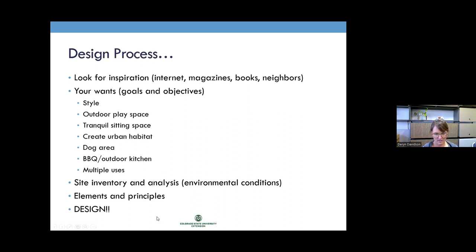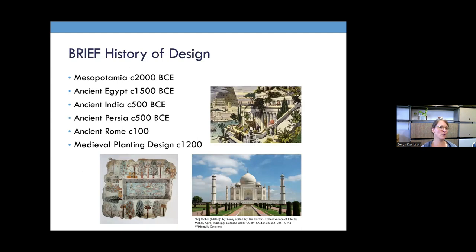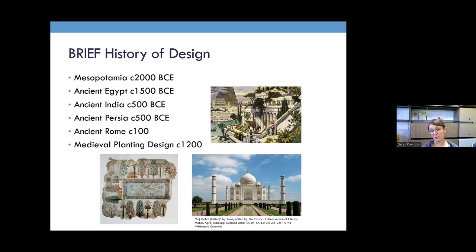Now we'll talk about the history of design. There are multiple semesters of this in school, so this is very brief — just scratching the surface. There is evidence of landscape design going way back to Mesopotamia, ancient Egypt, and ancient India. The hanging gardens of Babylon show very intentional use of garden design, bringing greenery into spaces where people were living and working.